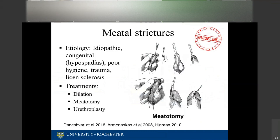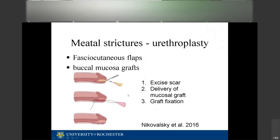For fossa navicularis or meatal strictures, the guidelines are comfortable with dilation, meatotomy, or urethroplasty. Etiologies include idiopathic, congenital, poor hygiene, trauma, or lichen sclerosus. The Hindman's guide for meatotomy involves making a ventral incision and sewing normal mucosa back to the edge of the meatotomy. These strictures can also be treated with fasciocutaneous flaps and mucosal grafts, though those are falling out of favor.